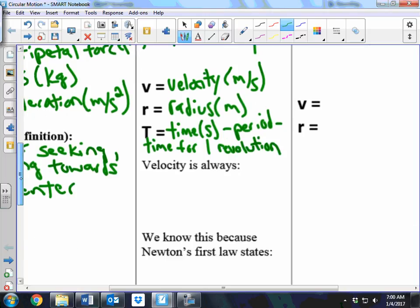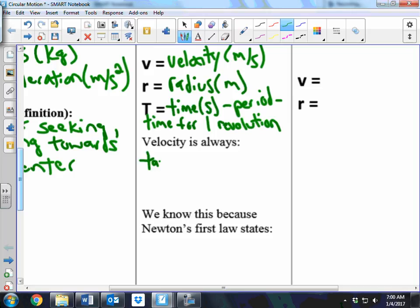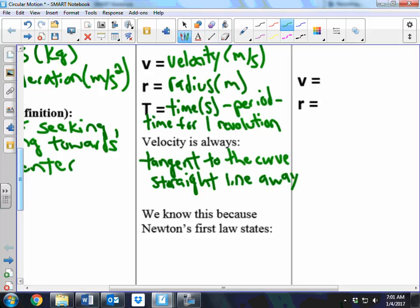So velocity is always tangent to the curve, which means it just goes in a straight line from where it let go. So it's like straight line away from the circle is another way you could think about it.